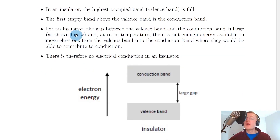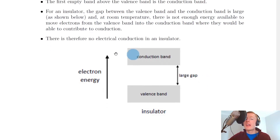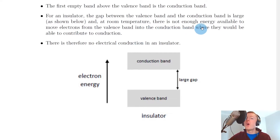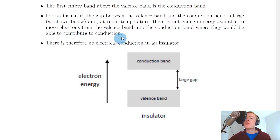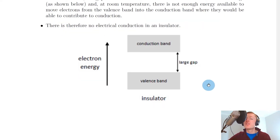For an insulator the gap between the valence band and the conduction band is large as shown in our energy diagram, and at room temperature there's not enough energy available to move electrons from the valence band into the conduction band where they would be able to contribute to conduction. There is therefore no electrical conduction in an insulator.